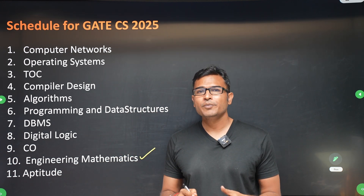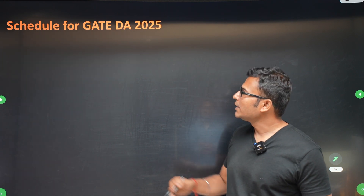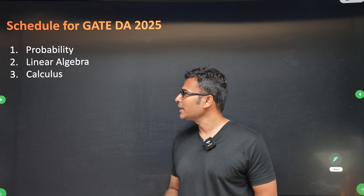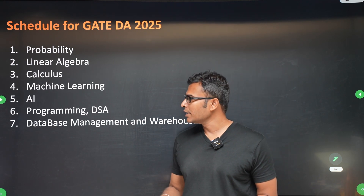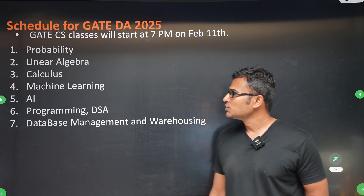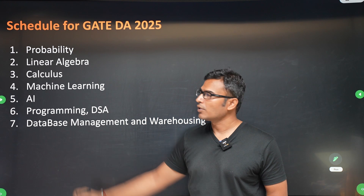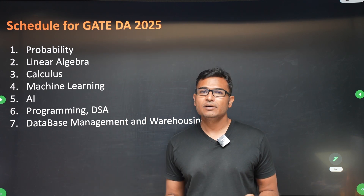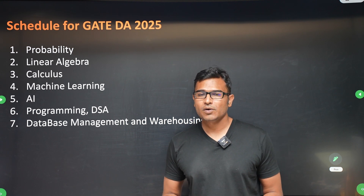Coming to GATE DA, this is the schedule we are following: probability, linear algebra, calculus, machine learning, AI, programming and DSA, and then DBMS. Comparatively, the syllabus for GATE DA will take less time compared to CS.